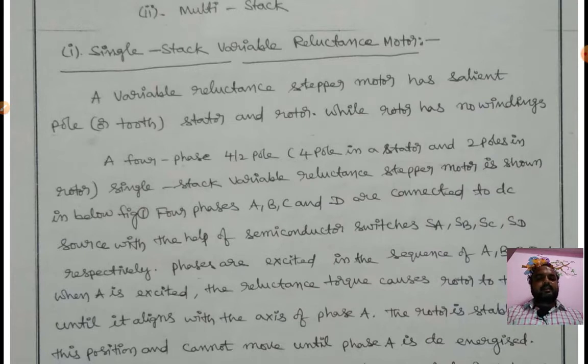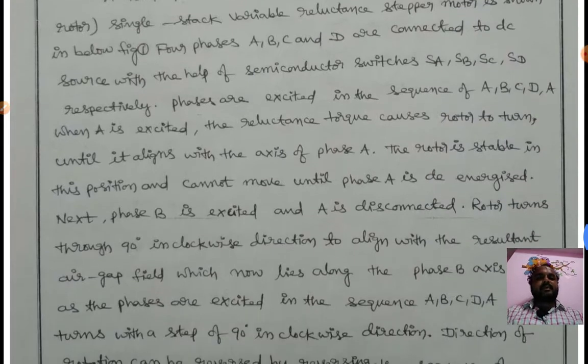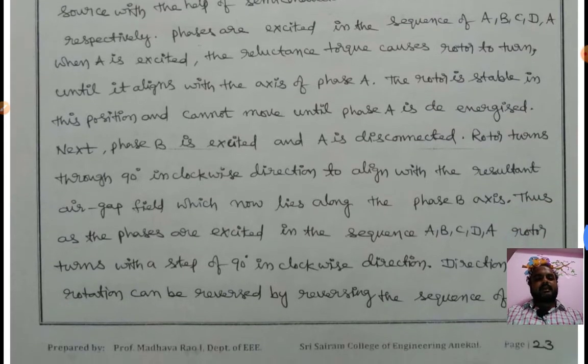As shown in the figure below, four phases A, B, C, D are connected to DC source with the help of semiconductors. Phases are excited in the sequence of A, B, C, D, A.